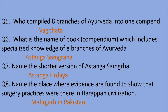Next: what is the name of the book — the compendium which includes specialized knowledge of 8 branches of Ayurveda written by Vagbata? The answer is Ashtanga Sangraha. So if the question asks who wrote Ashtanga Sangraha, the answer is Vagbata. The next question is: name the shorter version of Ashtanga Sangraha. The answer is Ashtanga Hridayam.